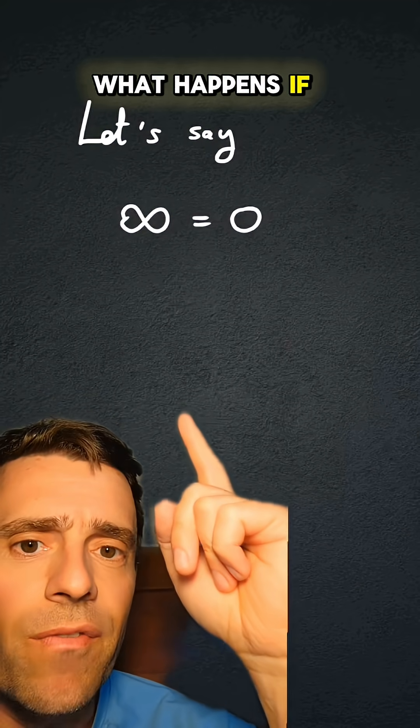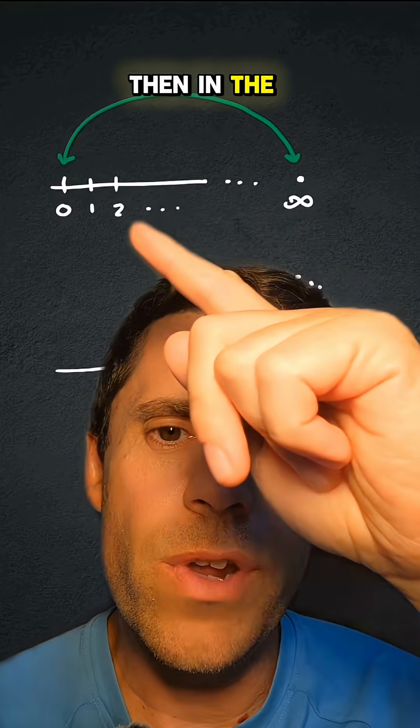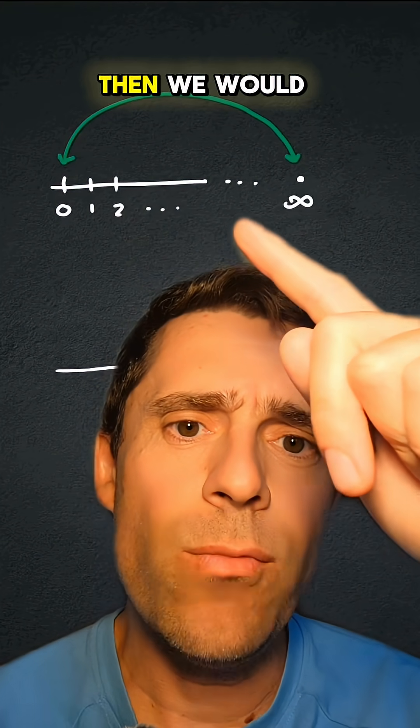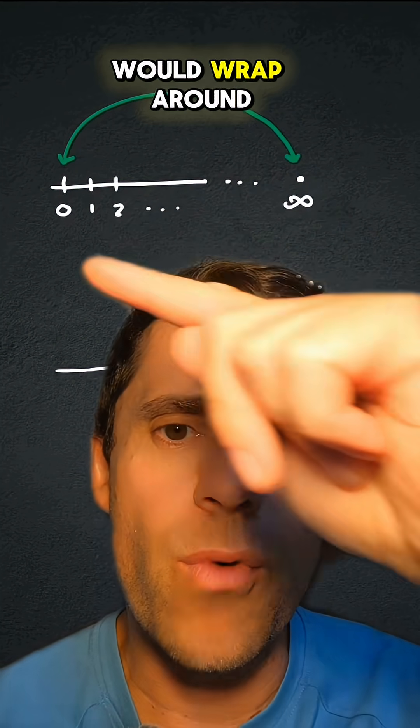So what happens if infinity was, in fact, zero? Then in the real line, we would have zero, one, two, and then we would approach infinity, but infinity is zero, so it would wrap around.